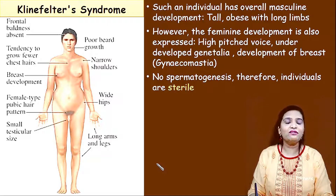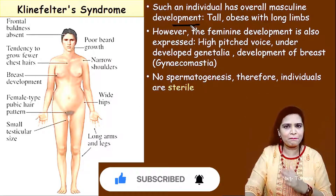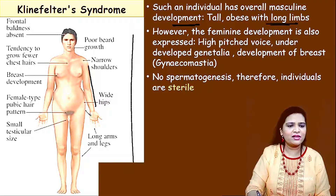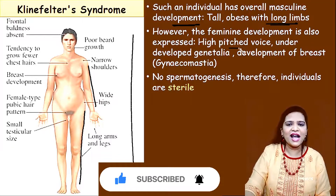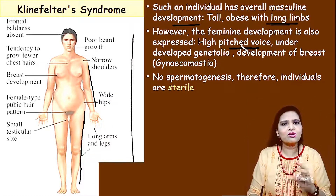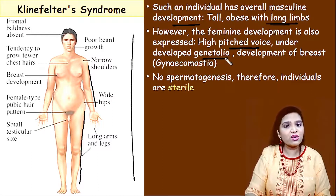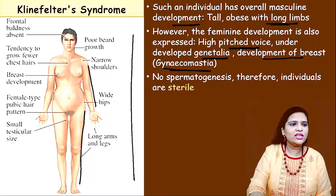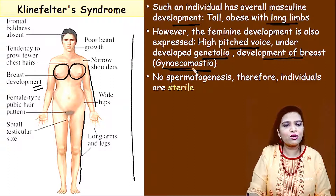What are the characteristics of Klinefelter syndrome patients? The individual has overall masculine development and looks male. The person is tall, obese, and fat with long limbs — hands and legs will be long. But the individual also possesses feminine characters: a high-pitched voice, and underdeveloped genitalia. Breast development is present — a condition called gynecomastia.